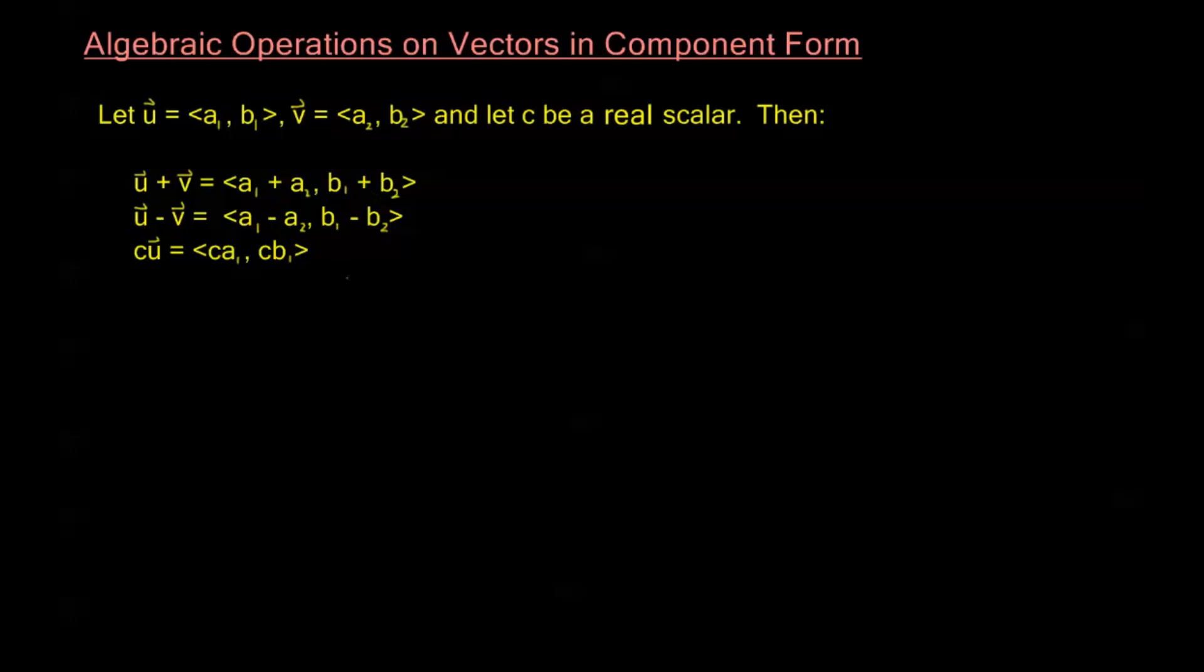Now, I'm going to go a little out of order. Let's look at this last one now. This last one is our multiplication by a scalar. If I have some real scalar c, and I multiply that to the vector u, the resultant vector is going to be c multiplied to the horizontal component and c multiplied to the vertical component. So, c times the vector <a1, b1> is the vector <c·a1, c·b1>.